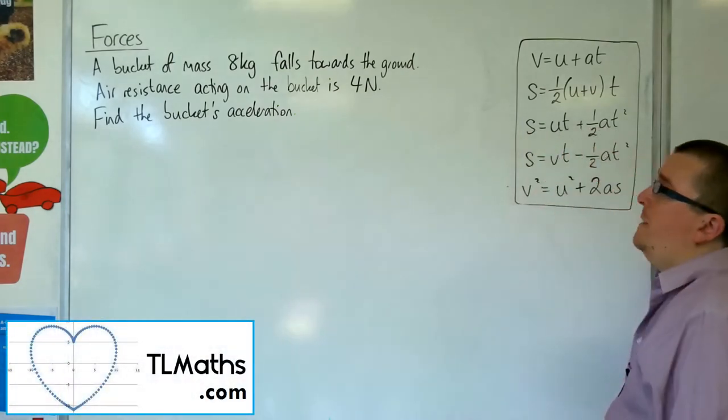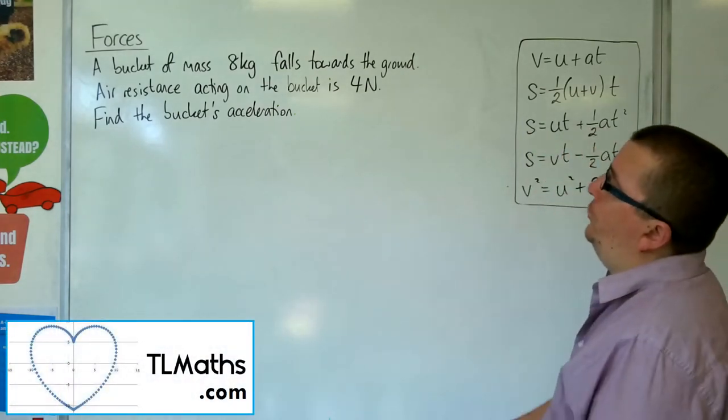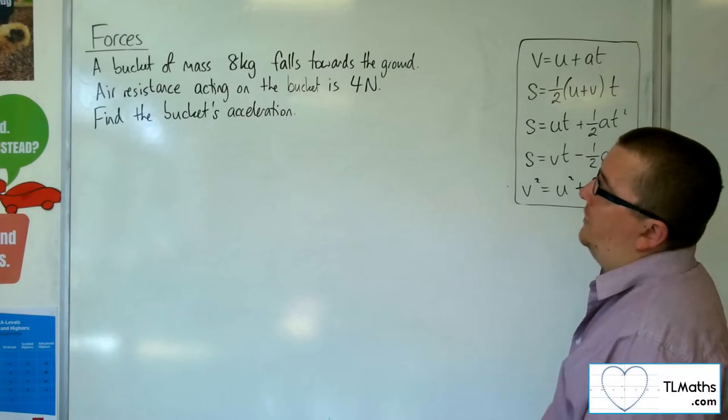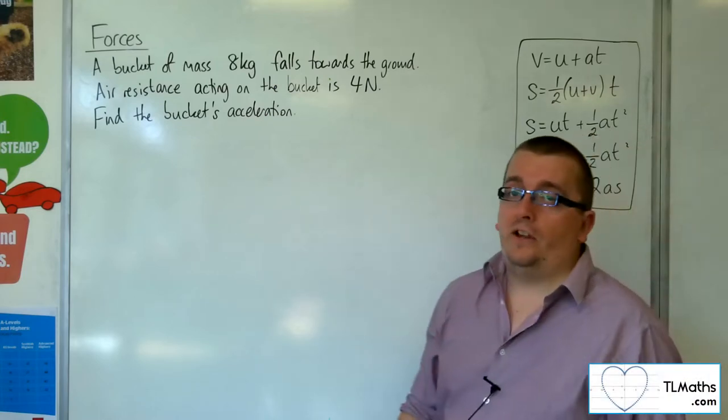In this video, a bucket of mass 8 kilos falls towards the ground. Air resistance acting on the bucket is 4 newtons. Find the bucket's acceleration.